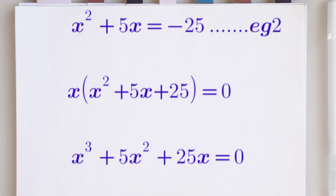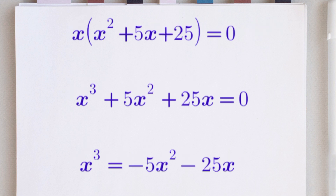We are going to write this equation as x raised to the power of 3 is equals to minus 5x squared minus 25x. Because we are solving for x raised to the power of 3, that is why we isolated it. On the right hand side, we can write our equation as minus 5 times the bracket x squared plus 5x.